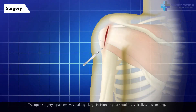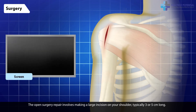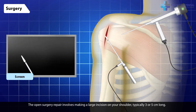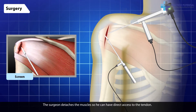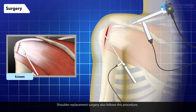The open surgery repair involves making a large incision on your shoulder, typically 3 to 5 cm long. The surgeon detaches the muscles so he can have direct access to the tendon. Shoulder replacement surgery also follows this procedure.